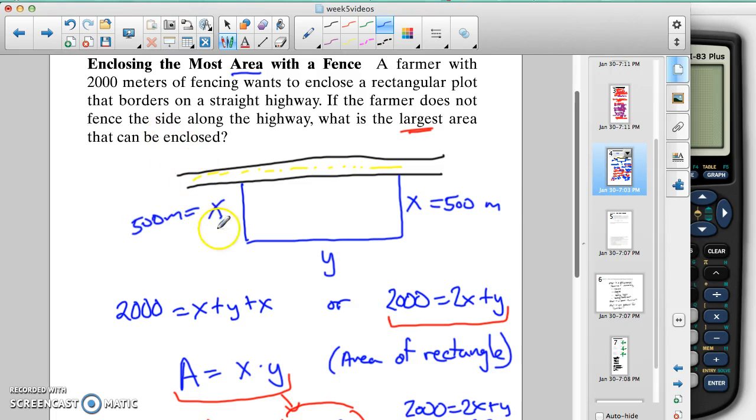So if we have 2,000 meters, these two add up to 1,000. So that means this piece also has to be 1,000 in order to add up to 2,000.